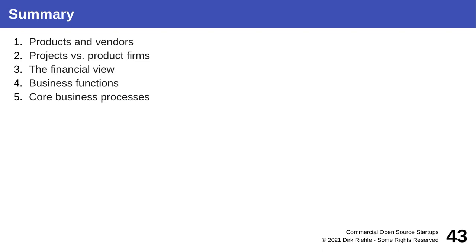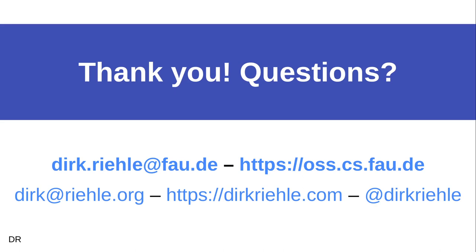That's it for this session. We talked about products and the vendors producing them, the key distinction between projects and product firms, and why it's so much nicer financially — if you survive — to be a software vendor rather than a consultancy. We looked at the income statement and how it reveals how a company operates. We also covered the various business functions and associated core processes. Thank you very much for your time and attention — see you in the next session. Bye bye.